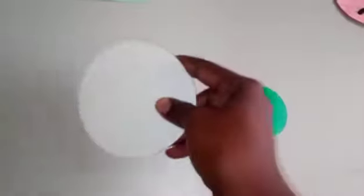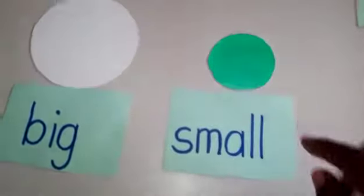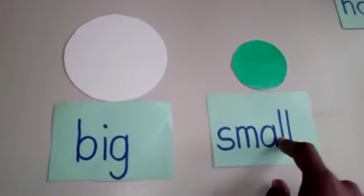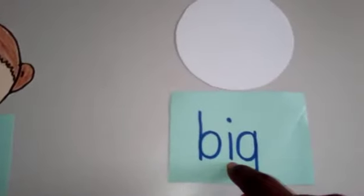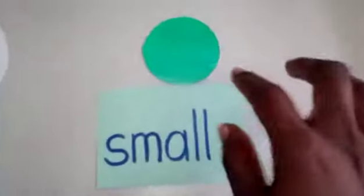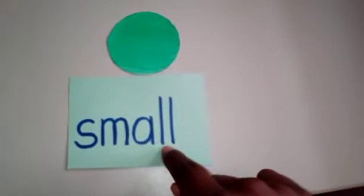Going over to the next pair. So, we have two circles right here. Can you tell me what is different about them? One is big and one is small. One circle is big and the other is small. So, we have big and small — if it is not big, it is small. Let us spell big: B-I-G, big. And we are going to spell small: S-M-A-L-L, small. So, you have big and small.